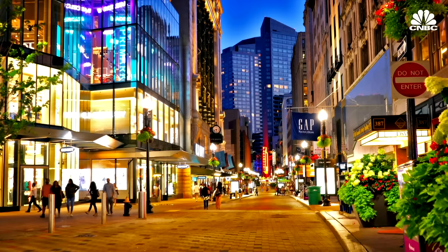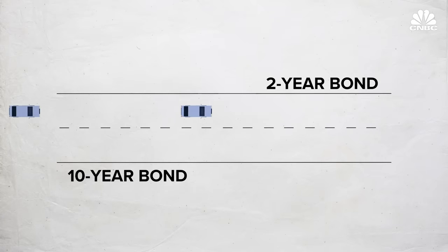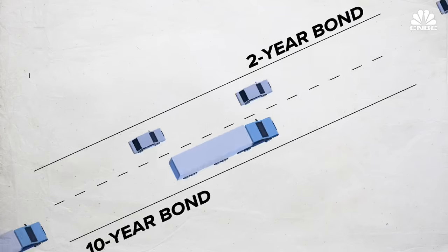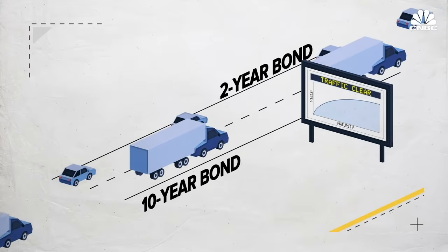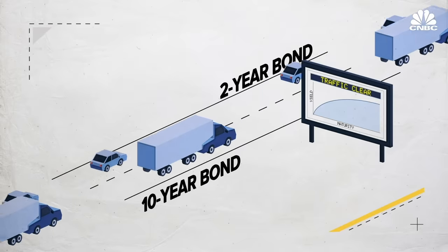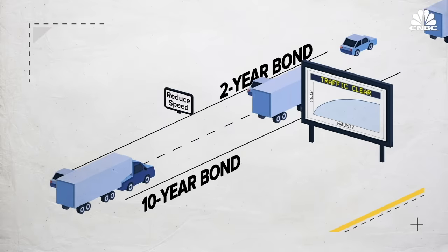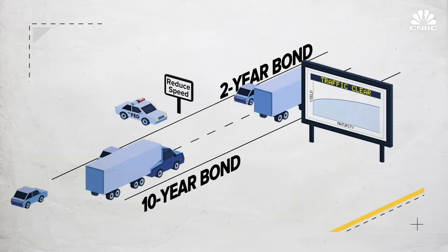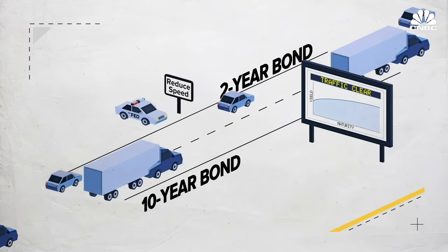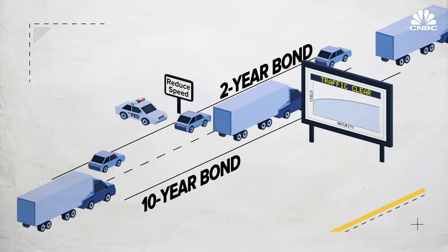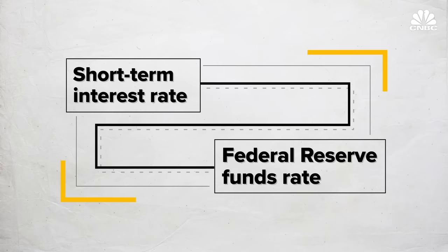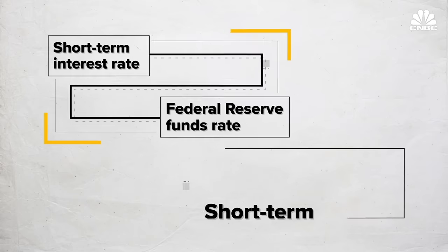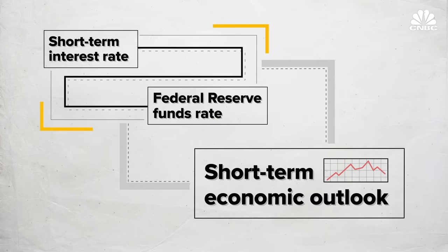To get a clearer idea of how they work, we can imagine traffic on an interstate. Think of two- and 10-year bonds like car and truck lanes on a highway. Normally, when the two-year rate is lower than the 10-year, traffic is moving along smoothly — cars in the two-year lane are moving faster than trucks in the 10-year. But the Fed raises its benchmark rate if they think things are going too fast in the left lane. Imagine the Fed like the sheriff enforcing the speed limit. Raising rates puts a damper on the economy, slowing down those in the fast lane. The short-term interest rate is more closely tied to the Federal Reserve funds rate and is more connected to how the economy is expected to perform in the short run.